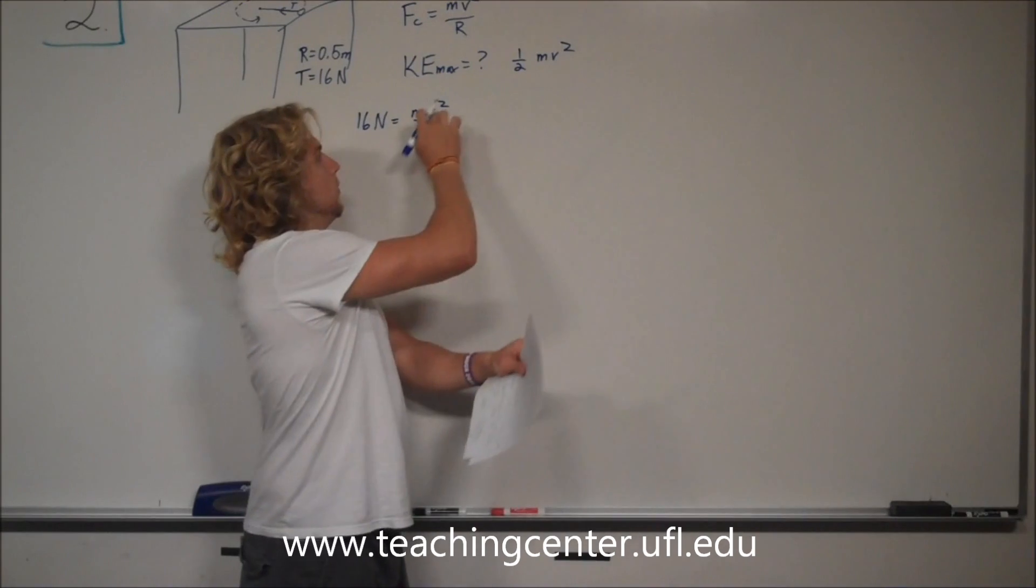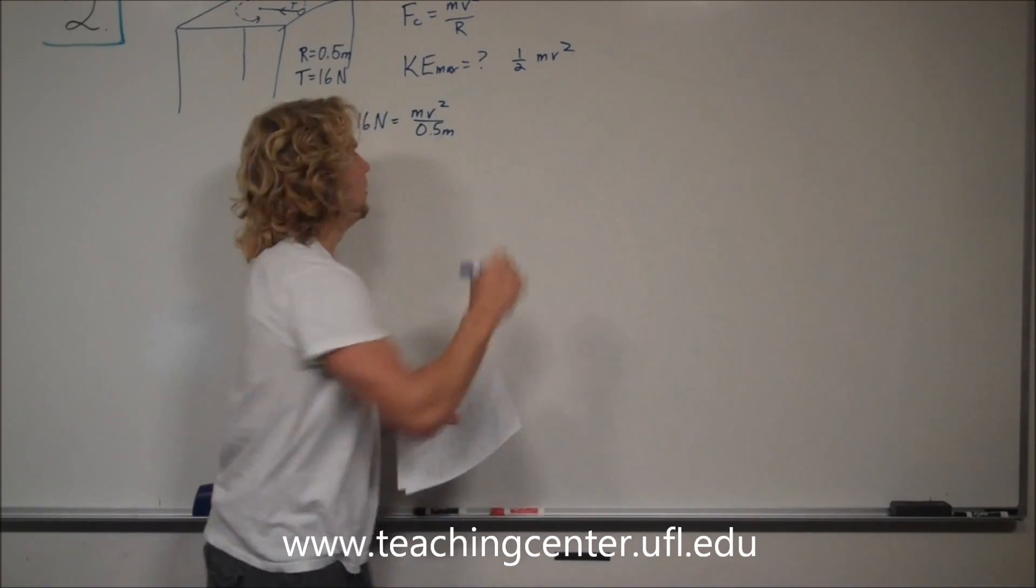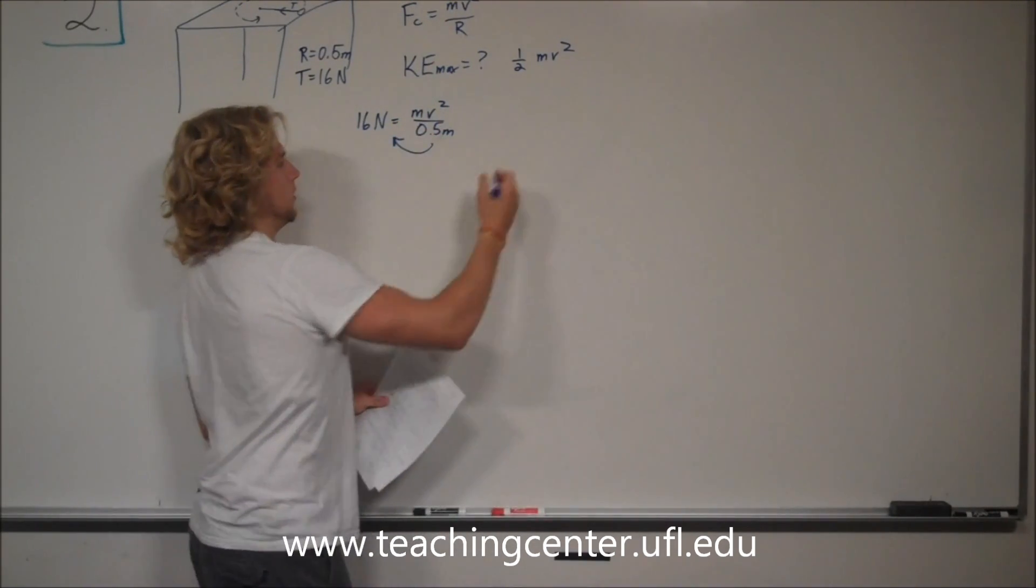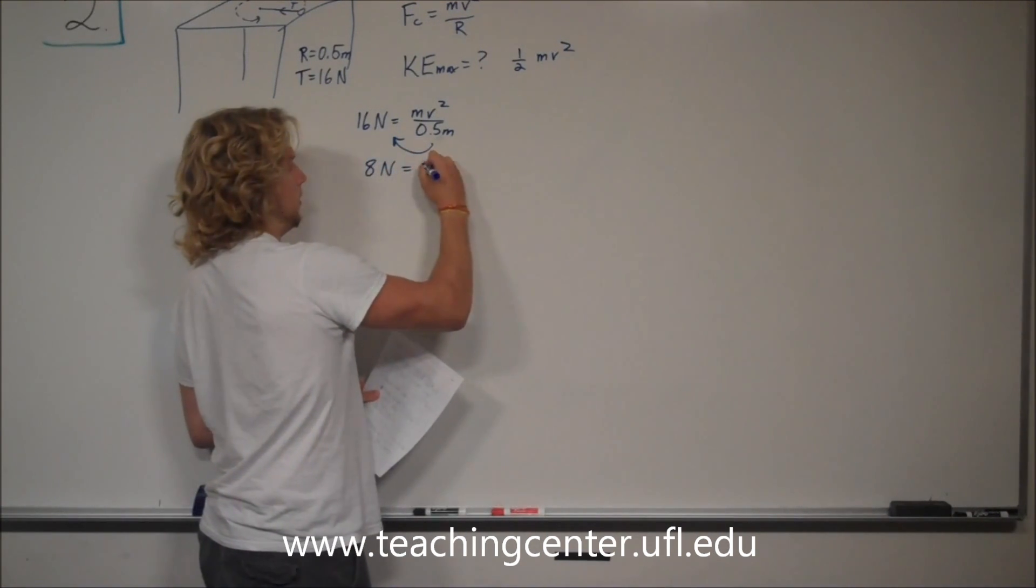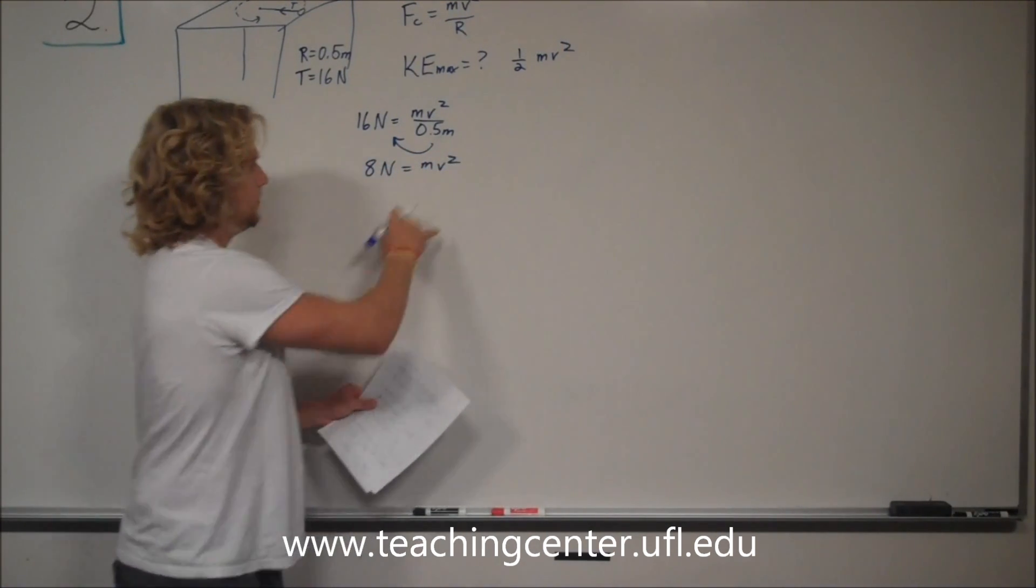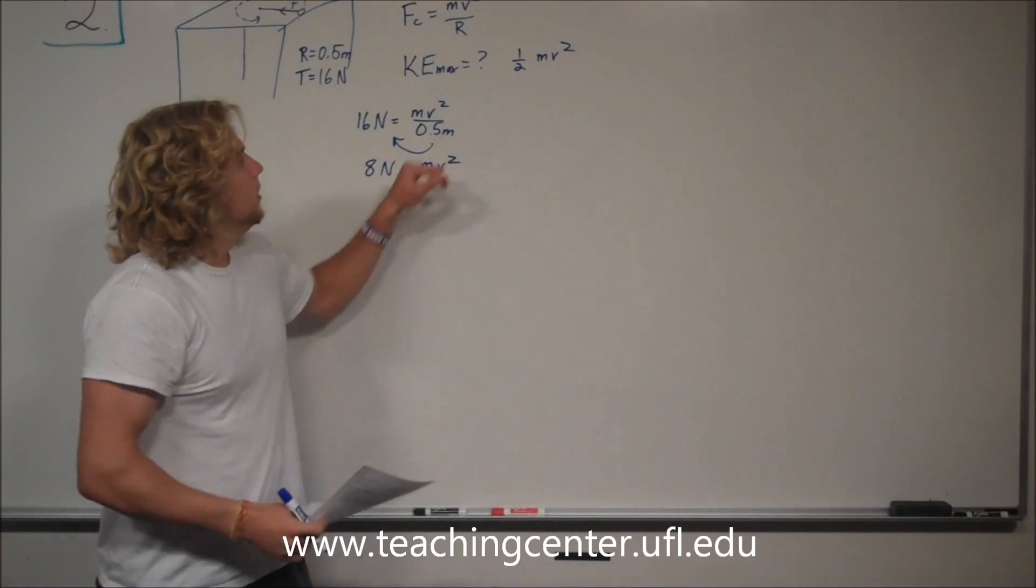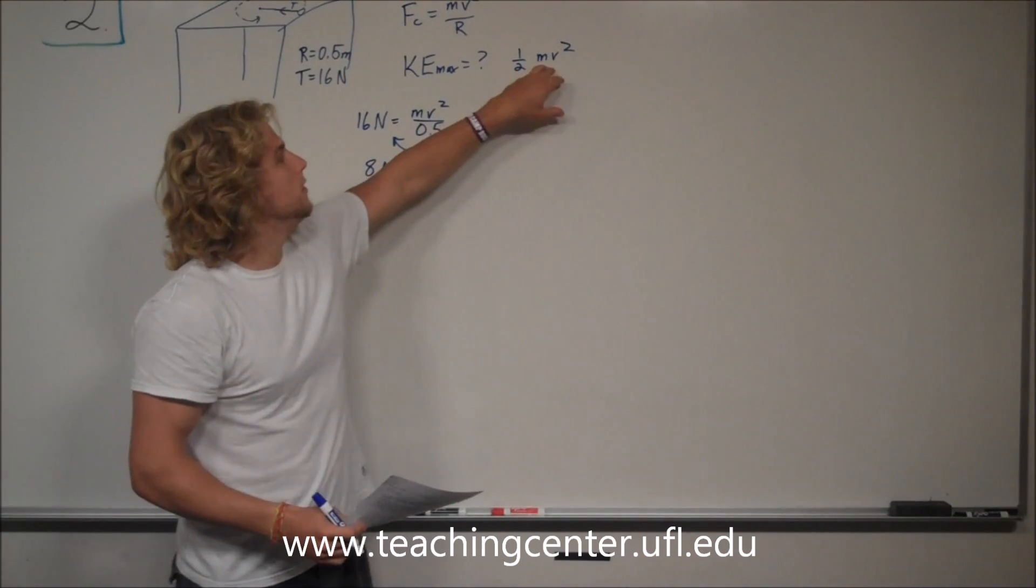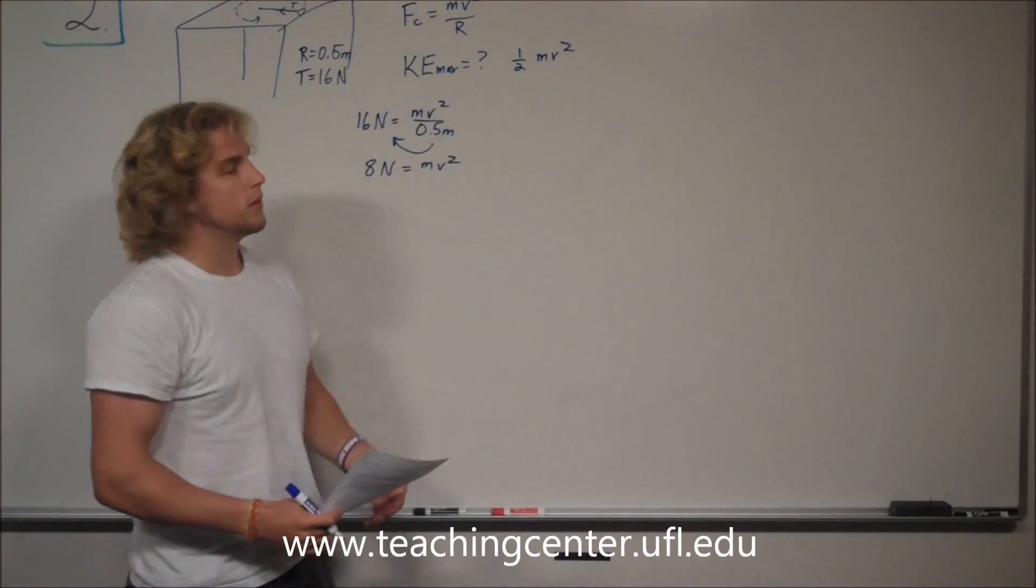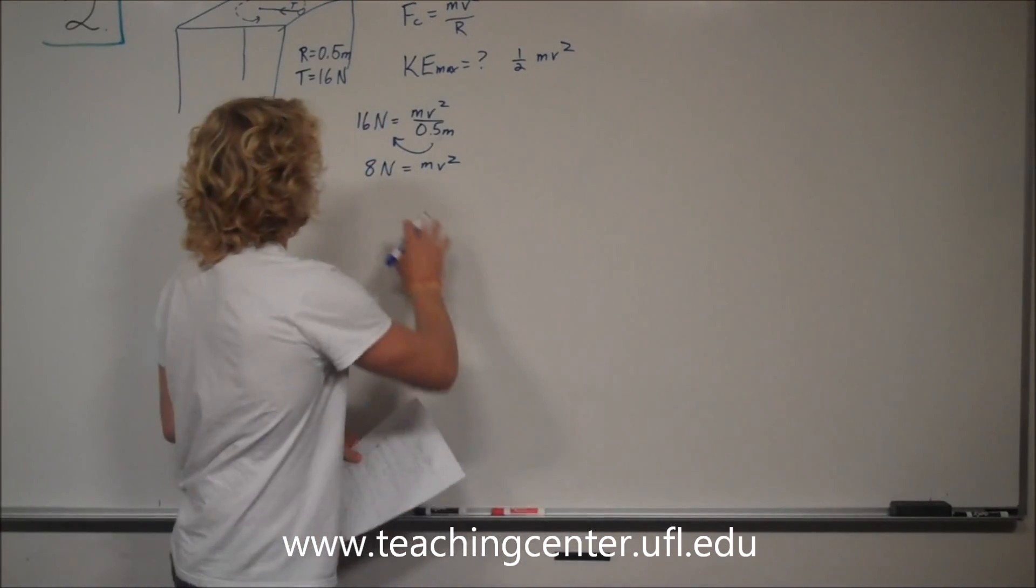Now let's find out what mv squared is by multiplying. So now we know 8 newtons is equal to mv squared. Let's go ahead and plug this in to find what the max kinetic energy is.